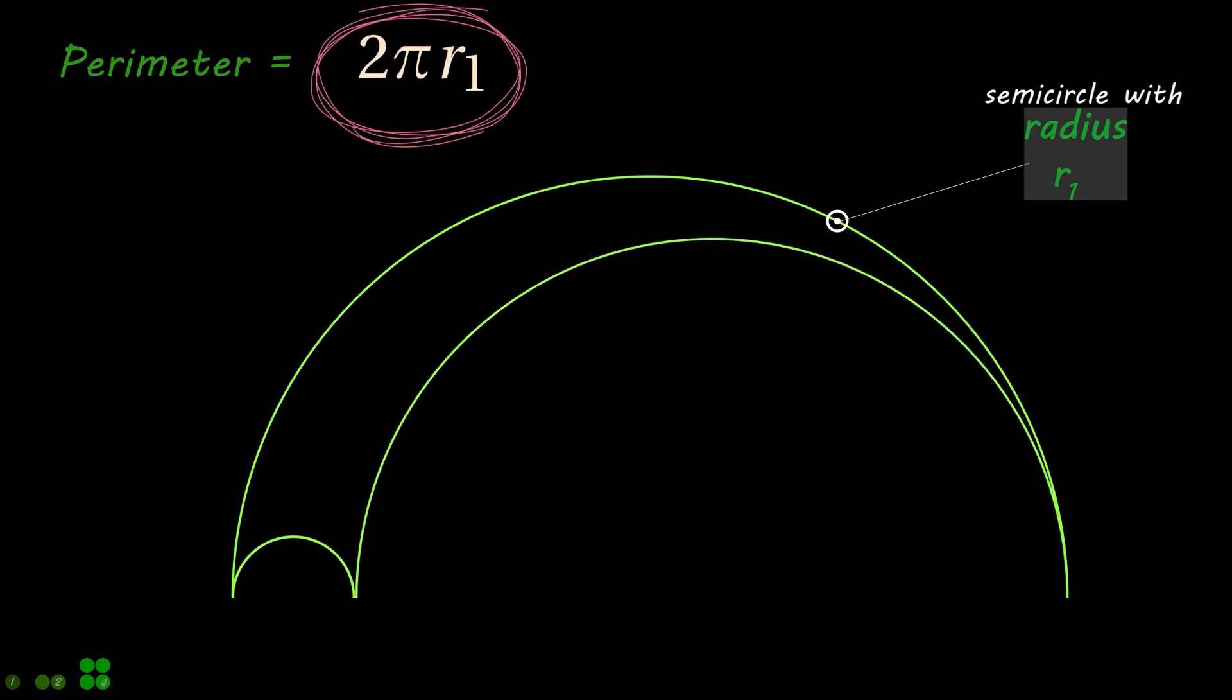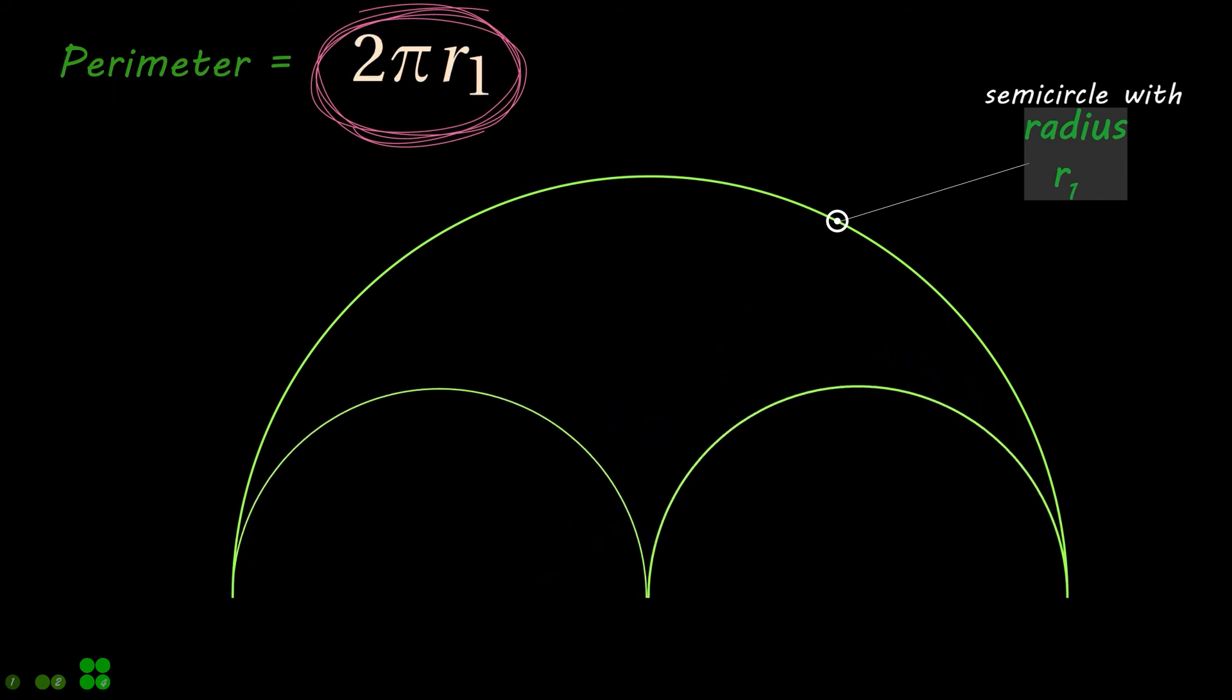This final expression shows that the perimeter only depends on radius R1, and hence is independent of the values of R2 and R3.